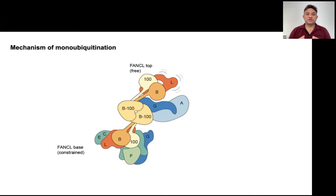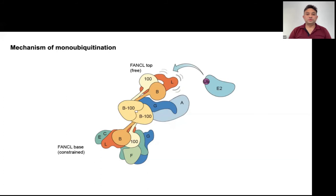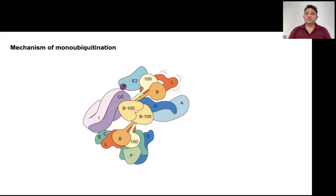Now let me tell you what the structure tells us about FA core function. FANCB and FAP100 are the molecular scaffolds, which coordinate positioning of FANCL and all the other subunits. This explains why the intact complex is more active than isolated FANCL, because it really stabilizes the FANCL protein. FANCL at the base, which is cratered by other subunits, plays a structural role, as our modeling has shown steric clashes for binding of ubiquitin-carrying E2 to it. Therefore, this leaves the FANCL at the top to act as the active E3 ligase, which binds to the ubiquitin-loaded E2. The substrate protein FANCD2-FANCI interacts with the complex through the substrate recognition module. FA core brings the two of them close enough so that they are correctly aligned for ubiquitin transfer. This hypothesis is being confirmed by a more recent structure of FA core bound to E2 and substrate from the Pavletich lab.